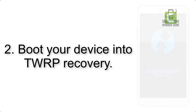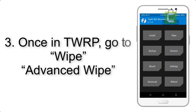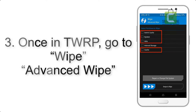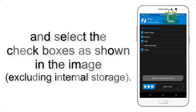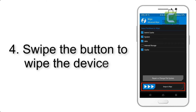Step 2: Boot your device into TWRP recovery. Once in TWRP, click on Wipe, then Advanced Wipe, and select the checkboxes as shown in the image, excluding internal storage. Step 4: Swipe the button to wipe the device.